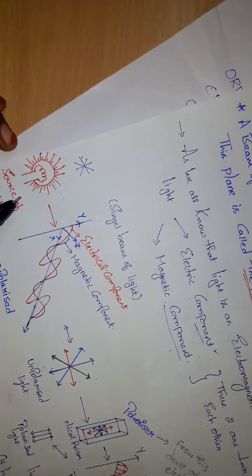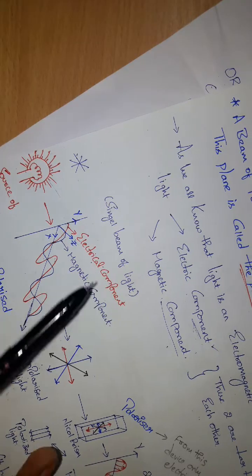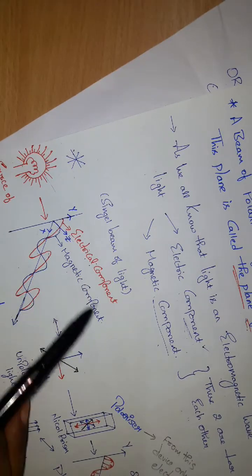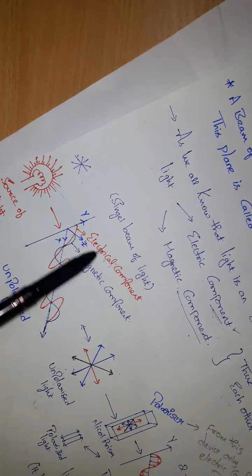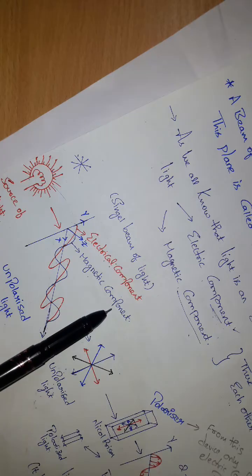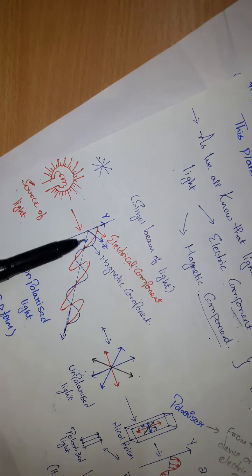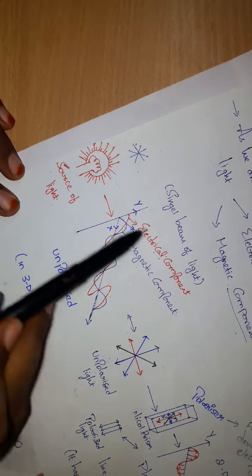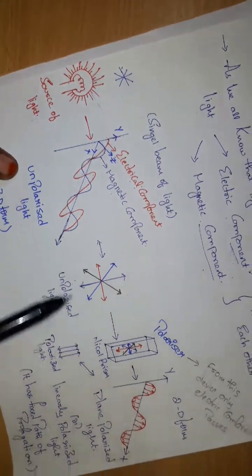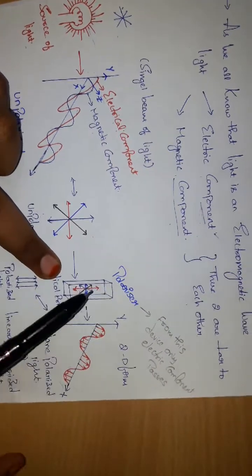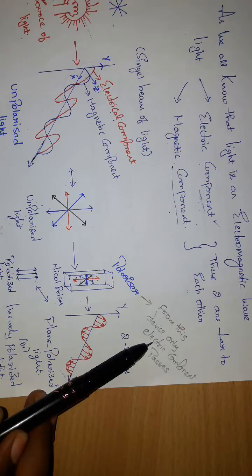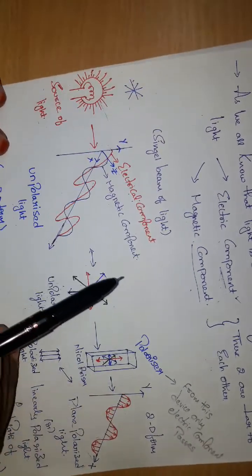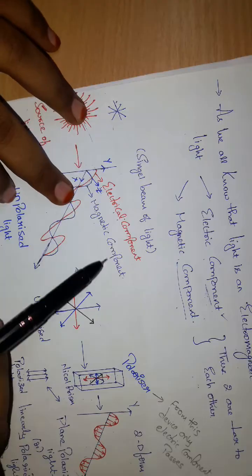In this source of light, consider a single beam having both electrical and magnetic components, which are perpendicular to each other. The red line indicates the electrical component and the blue line indicates the magnetic component. The three axes — x, y, and z — represent it in 3D form as unpolarized light. When unpolarized light is passed through a nickel prism (polarizer), it allows only the electrical component to pass.